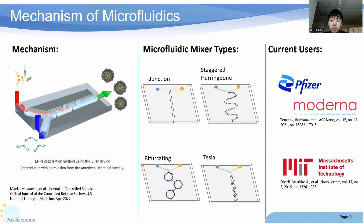The core mechanism behind microfluidics revolves around the precise manipulation of fluids at the micro scale. Micromixers induce chaotic flow patterns, promoting rapid and thorough blending of fluids. These micromixers can be tailored to specific applications, enabling researchers to achieve desired mixing performance, as you can see with various approaches to mixer types shown in the middle.